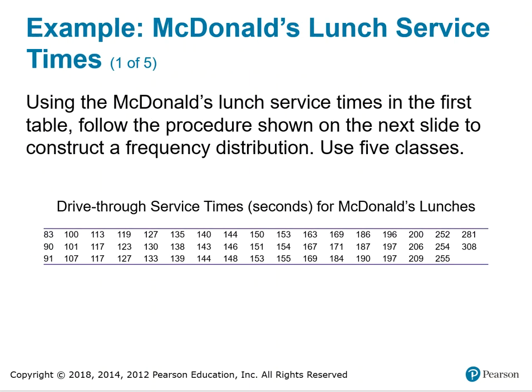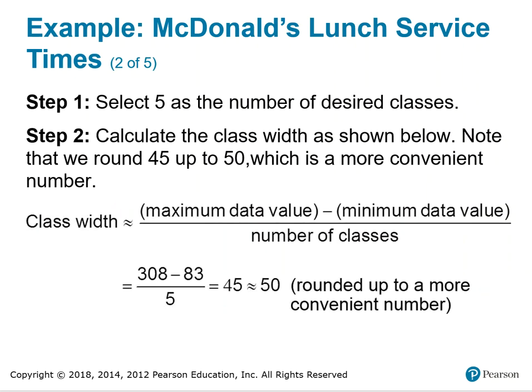Here's an example. Using the McDonald's lunch service times in the first table, follow the procedure shown on the next slide to construct a frequency distribution using five classes. First, we select five as the number of desired classes. Then calculate the class width as shown. Note that we round 45 up to 50, which is a more convenient number.